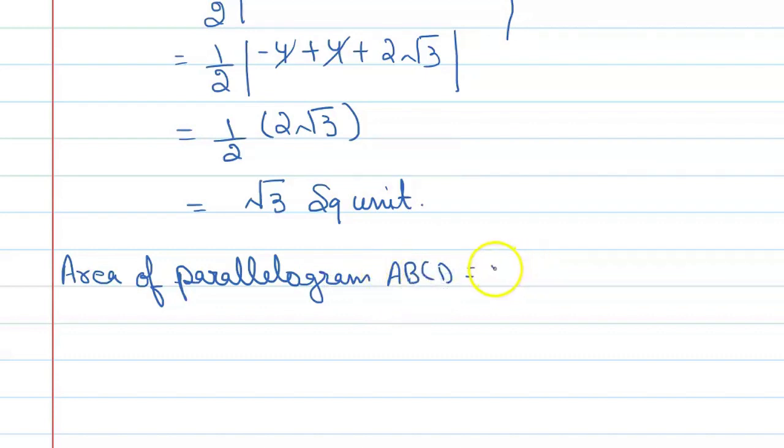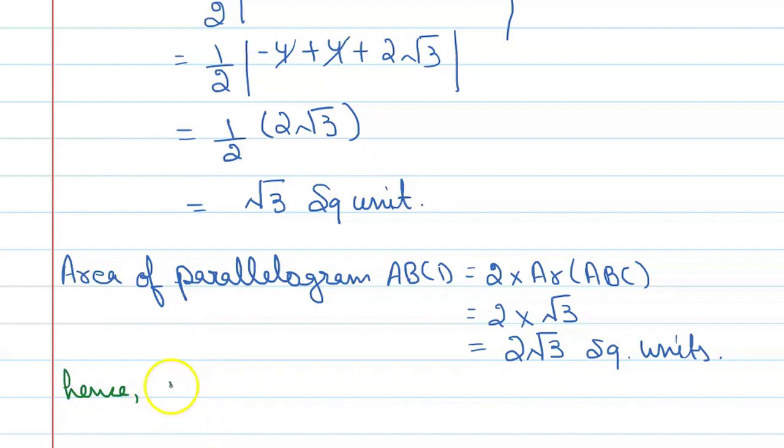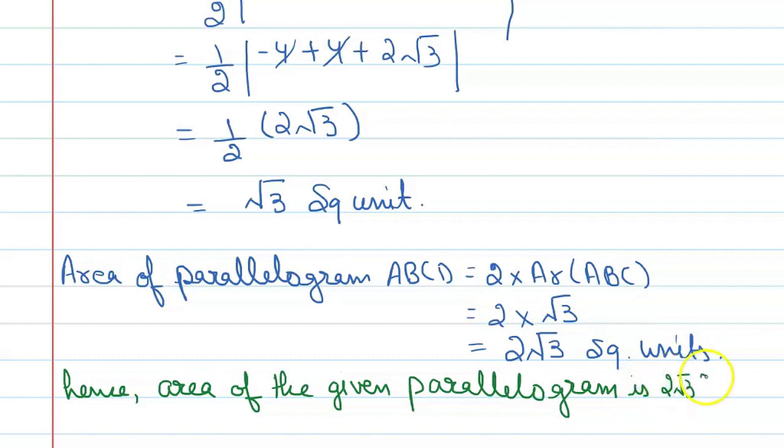Area of parallelogram ABCD is equal to double of area triangle ABC, so this will become 2 into root 3, which is 2 root 3 square units. So here we have our final answer. Hence area of the given parallelogram is 2 root 3 square units. Alright, thank you.